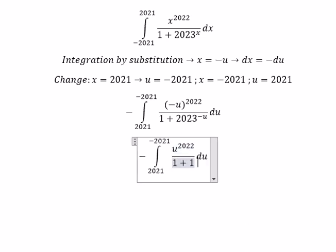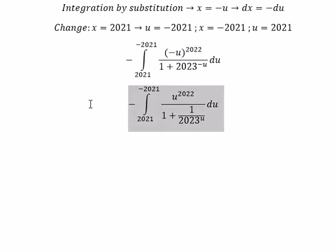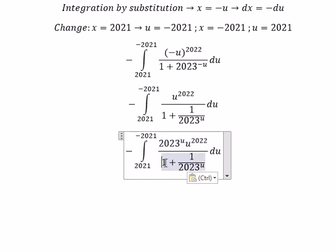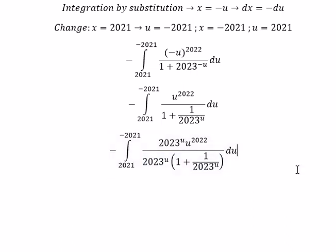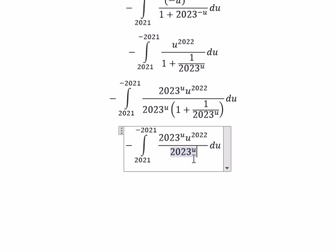This one we put 1 over 2023 to the power of u. Then we multiply by 2023 to the power of u on both the numerator and denominator. So this gives us 2023 to the power of u plus 1. Because we have the negative, we can swap the top and the bottom together.